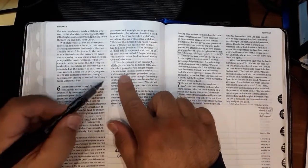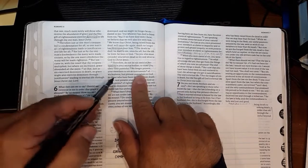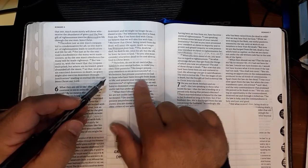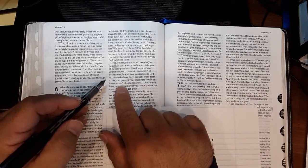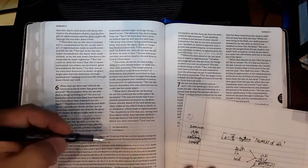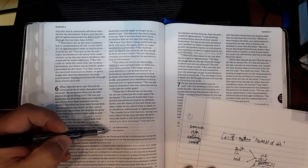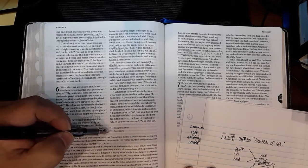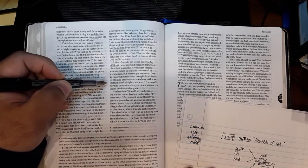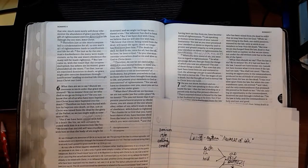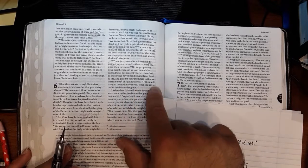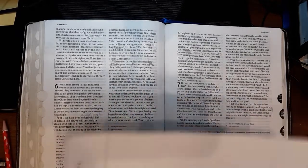And he goes on: no longer present your members to sin as instruments. Some translations rightly say weapons of wickedness, but present yourselves to God as those who have been brought from death to life and present your members to God as weapons of righteousness. So this word for instruments also means weapons. The correct translation is weapons because again, Paul is using the language of warfare. For sin will have no dominion over you since you are not under law, but under grace.